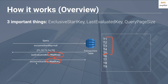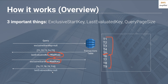The last evaluated key acts as a checkpoint. The next time you make a call, you set your exclusive start key to equal that last evaluated key returned from the previous query. DynamoDB then knows it left off at T5 and will go ahead and retrieve T6 through T9. If there's no more data remaining, the last evaluated key will be null — that's how you know you're done querying. You keep calling until the last evaluated key returned is null.